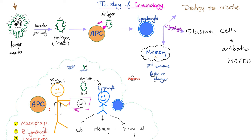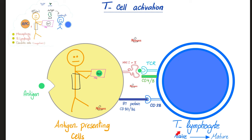This is the story of immunology. Bacteria invaded your body — take a piece of it, called the antigen. The antigen-presenting cell takes that piece and presents it to the lymphocyte. The food is presented on a tray. The tray is the major histocompatibility complex. Since this lymphocyte is probably CD4, the MHC is MHC class 2.